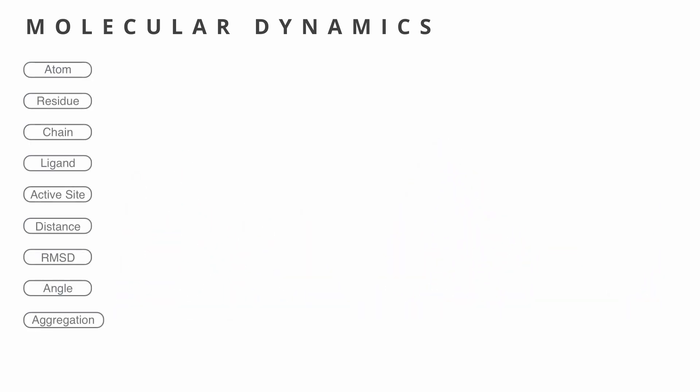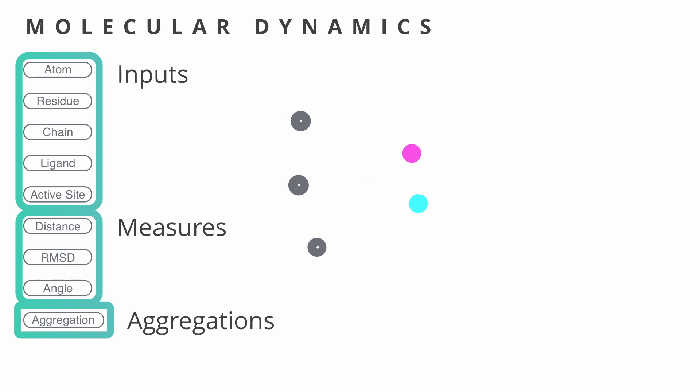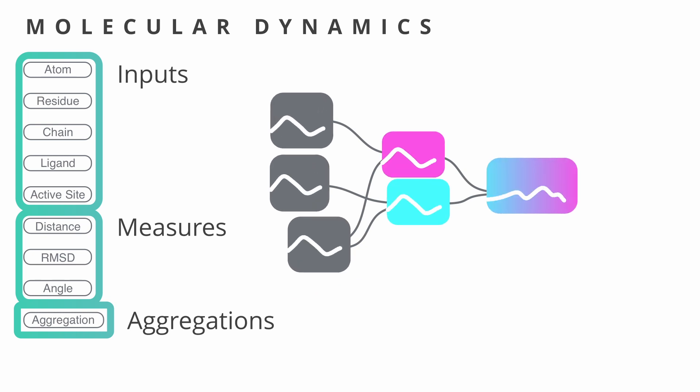So let us look at the components on the left. We can divide them into three groups: inputs, measures and aggregations. We use these components as building blocks of the data flow graph to explore the properties. We expand the graph nodes into boxes containing a line chart to quickly overview all computed measures.